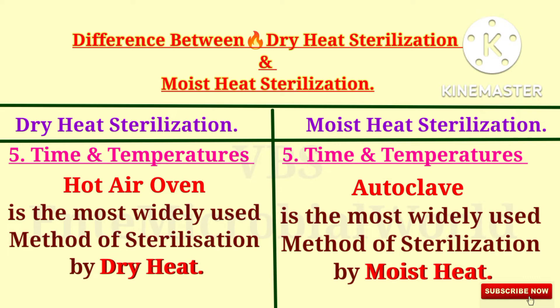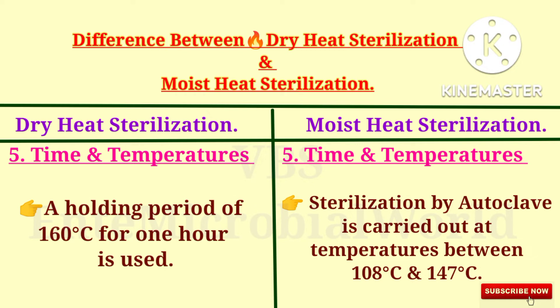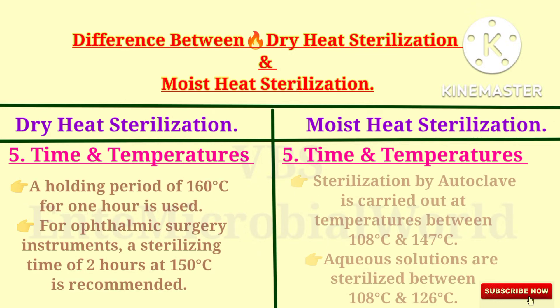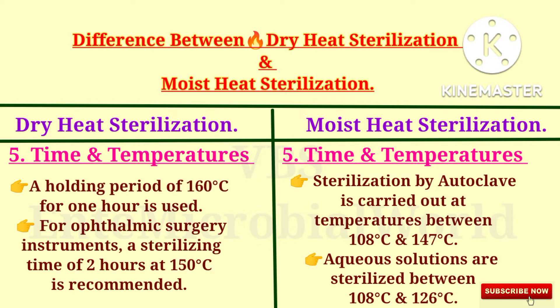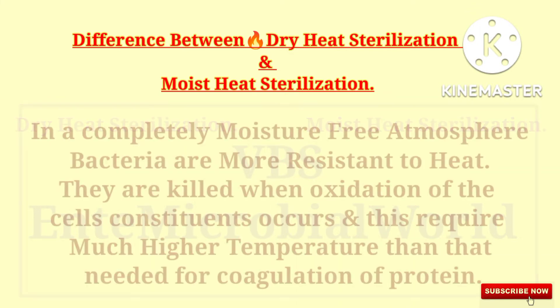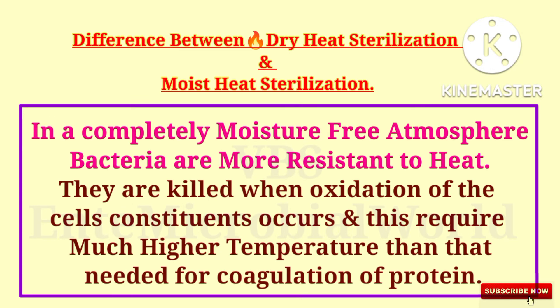Autoclave is the most widely used method of sterilization by moist heat. Sterilization by autoclave is carried out at temperatures between 108 degrees Celsius and 147 degrees Celsius. Coarse solutions are sterilized between 108 degrees Celsius and 126 degrees Celsius.